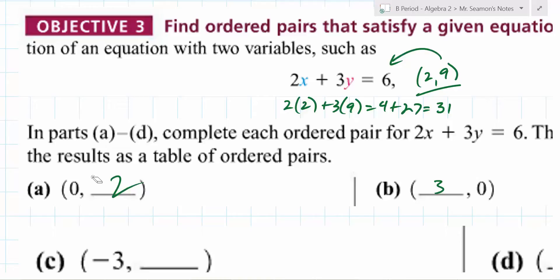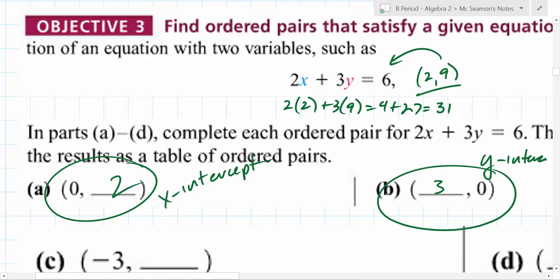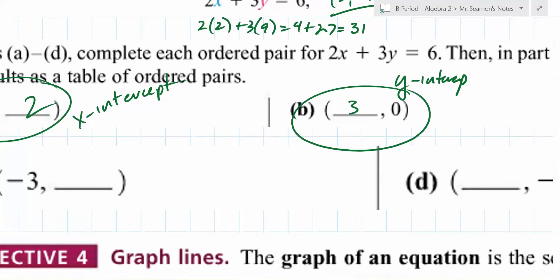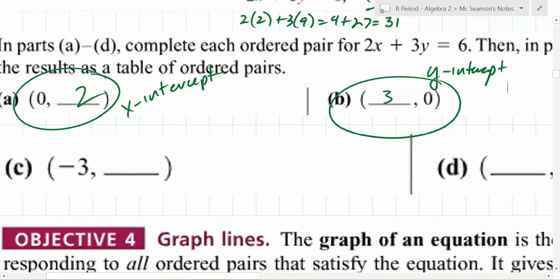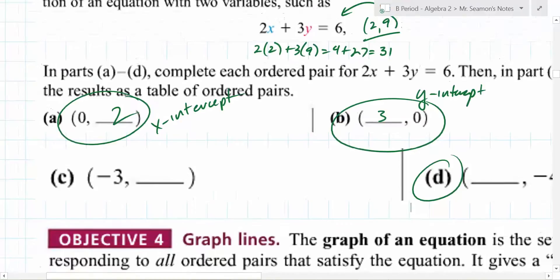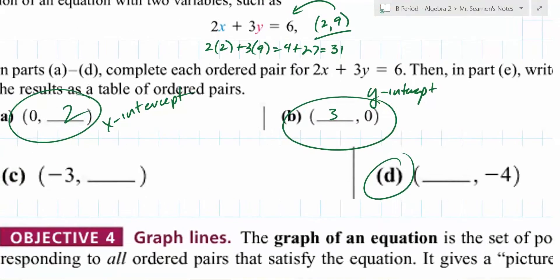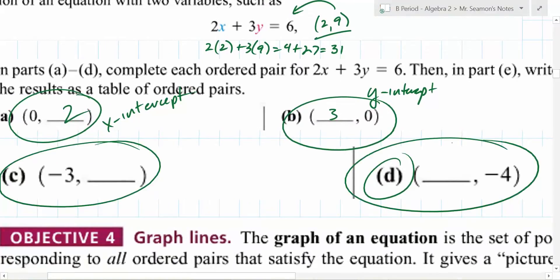Those specific points actually have special names. Anybody know what the special names are? The intercepts. That's exactly right. This one right here is where it crosses which axis. This is the x-intercept. And what's this one right here? Are those going to be super helpful points to have sometime? Do all lines have both an x-intercept and a y-intercept? No, but a lot of them do. Okay, so do this for me. For c and d. For c and d, fill in the blanks there. Don't say it out loud, but fill in the blanks. These two points right here for c and d, they are on the line 2x plus 3y equals 6. Figure out the blanks. Write those numbers down, and then I'll ask you about them.